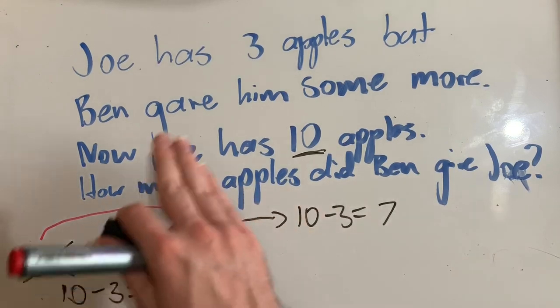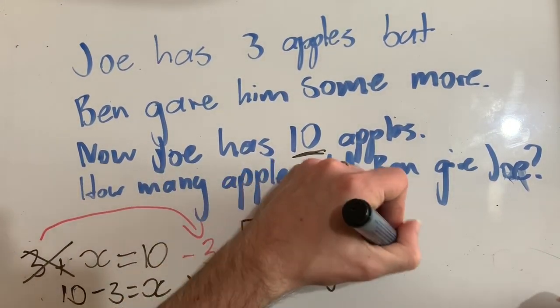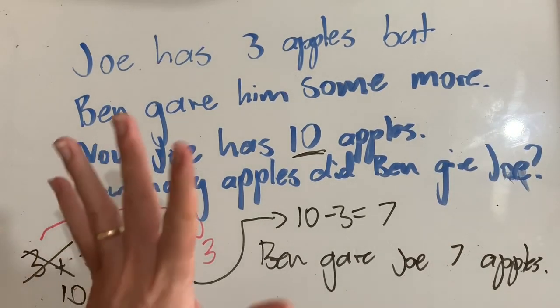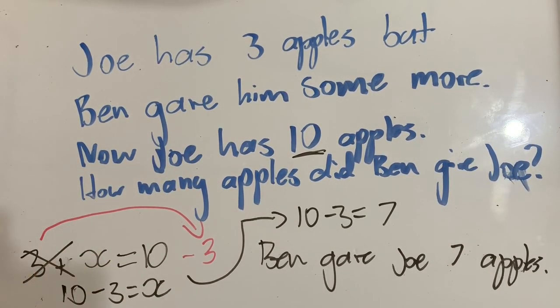So now because it's a worded problem, I need a worded answer. Ben gave Joe seven apples. And there we have it. In this video, we have learned how to use opposite operations to find missing values in addition equations.